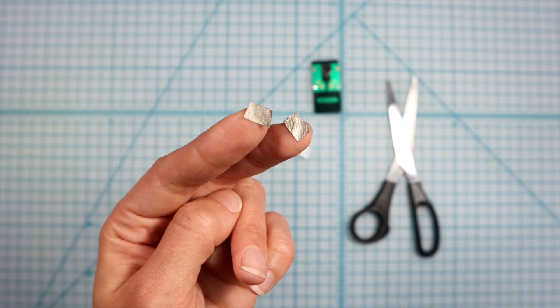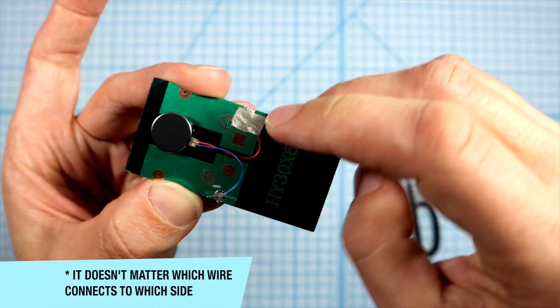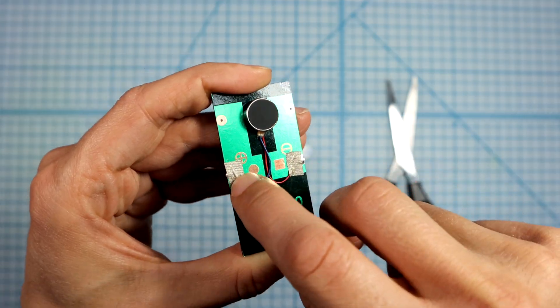Cut two very small pieces of maker tape and use them to stick the ends of the wires to the two silver contacts on the back of the solar cell. Press down firmly to make sure there's a good connection.